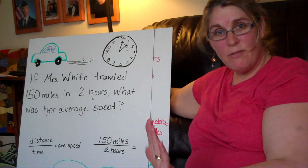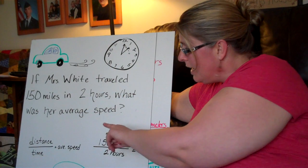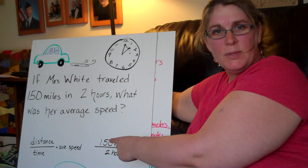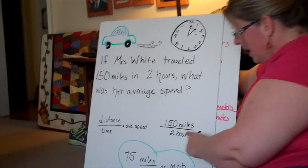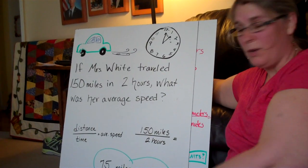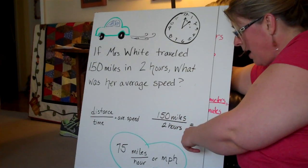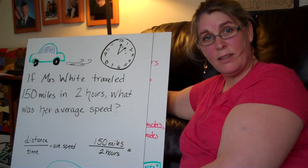Every time you do any kind of problem to calculate something for me, I want you to always write down the formula first. Distance divided by time equals average speed. Then you take the numbers and the words. Those units are important. You've got to have them: 150 miles divided by two hours, and then you do the calculation.